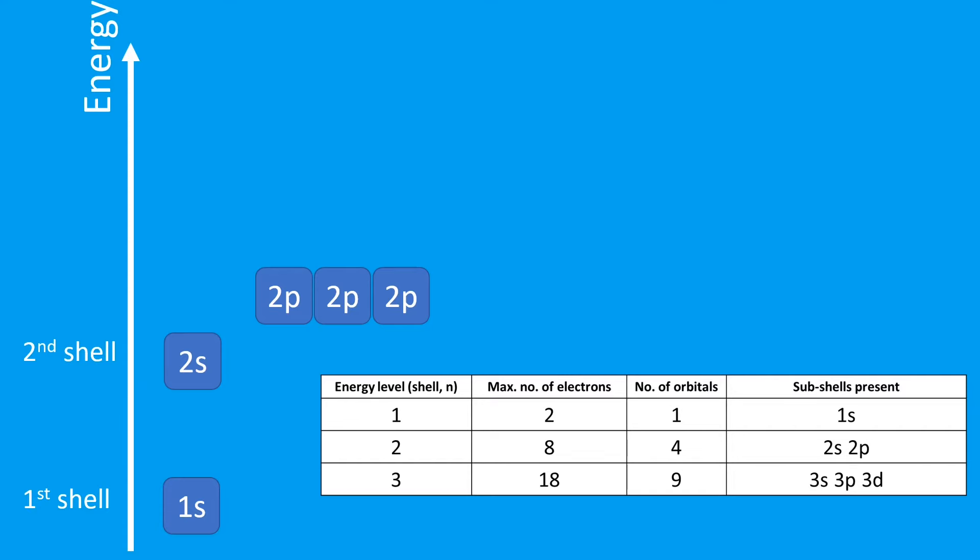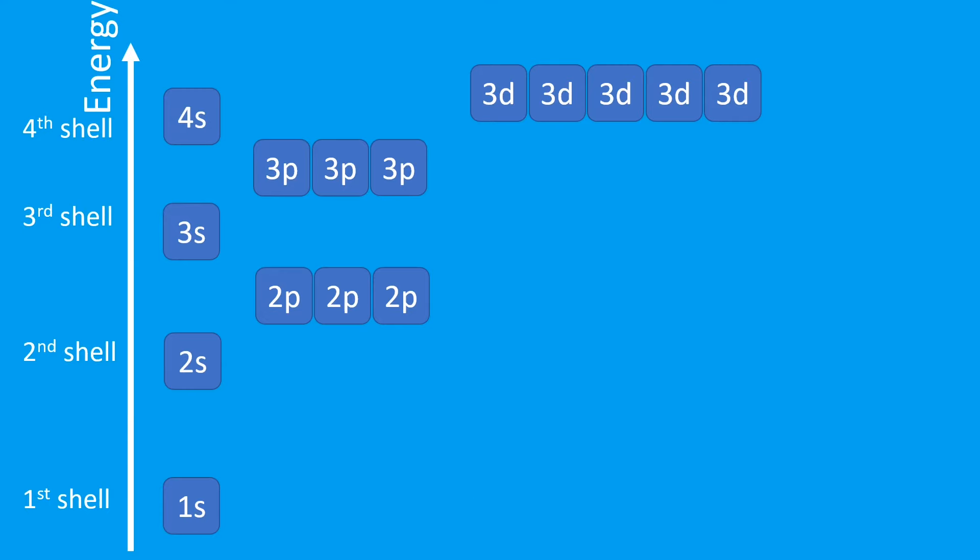Then we go to the third shell, which is nine orbitals. It consists of an s subshell which is just one orbital, a 3p subshell which is three orbitals, and a 3d subshell which is in fact five orbitals because that d subshell can hold 10 electrons. Now this is where it does get a little bit awkward because the fourth shell actually begins to fill before the 3d. So the 4s from the fourth shell is actually slightly below the 3d. If we were to apply Aufbau's principle, the 4s will fill before the 3d, and that is in fact the case.